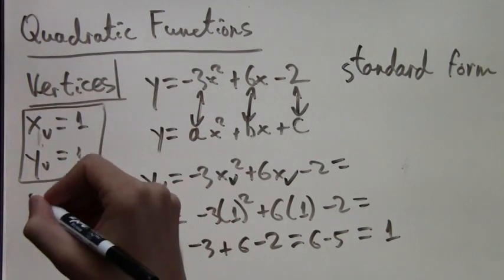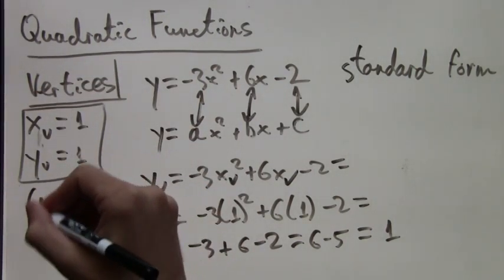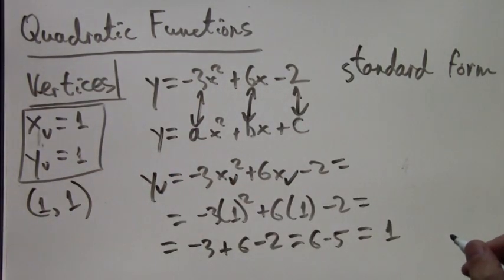So there's our answer, and we can write it down as a point, (1, 1), coordinate pair.